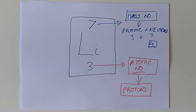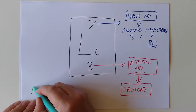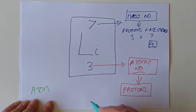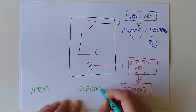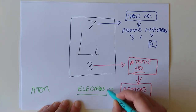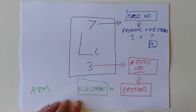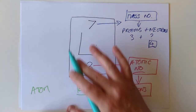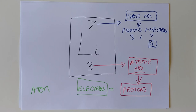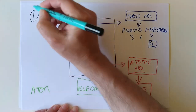Poor old electrons seem to have missed out on this party. But for a normal atom, the electrons are equal to the protons. So in this case, three electrons, because there are three protons. And this is basically nuclide notation — almost done, about 90% done. There's just one tiny bit of polish we need to put on it. So let's have a look at learning outcome number two.